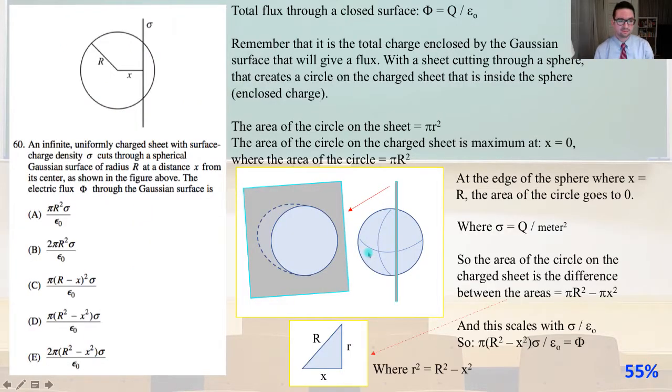Number 60. An infinite uniformly charged sheet with surface charge density σ cuts through a spherical Gaussian surface of radius R at a distance X from its center. The electric flux through the Gaussian surface is? The total flux through a closed surface is Q over ε₀. Remember that it is the total charge enclosed by the Gaussian surface that will give a flux. With a sheet cutting through a sphere, that creates a circle on the charged sheet that is inside the sphere, the enclosed charge.